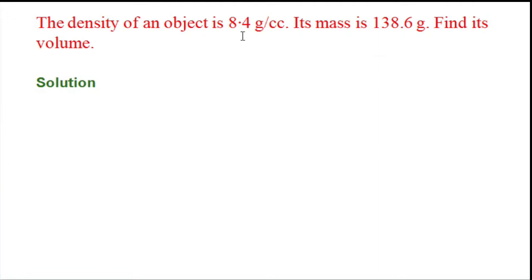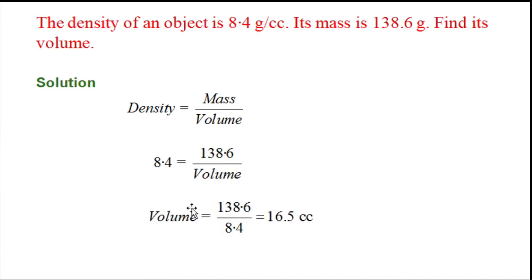Here again density is given along with the mass of the object. Again, we will apply the same formula: density equals mass by volume, and we will put the corresponding values. Here density is 8.4, so in place of density we have written 8.4, in place of mass we have written 138.6, and the volume we will find out. Therefore, volume equals mass by density, 138.6 divided by 8.4. If you divide, you will get 16.5 cc, because it is in CGS system.